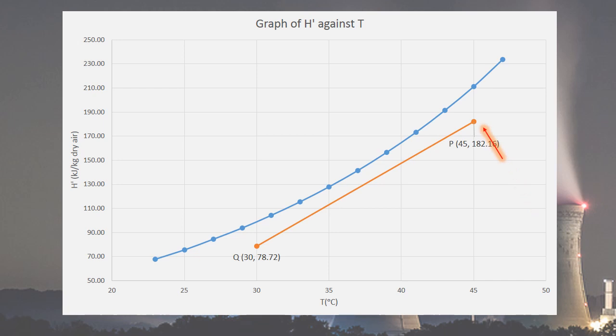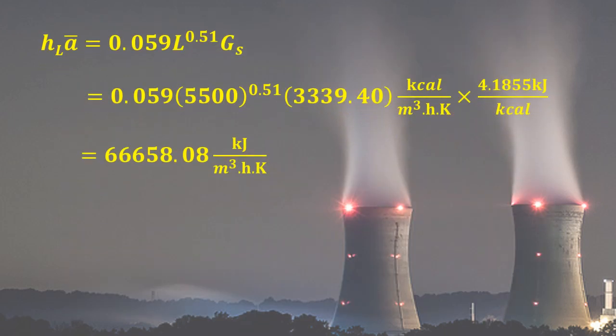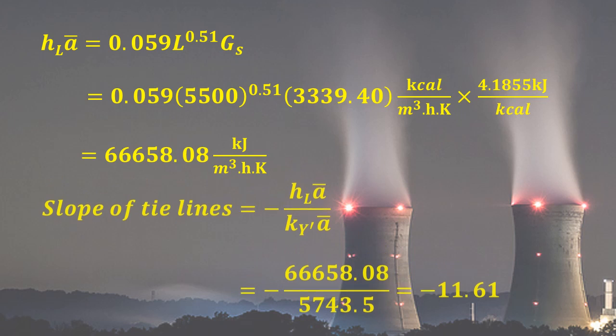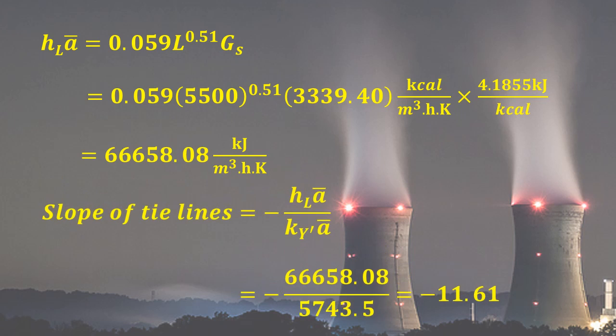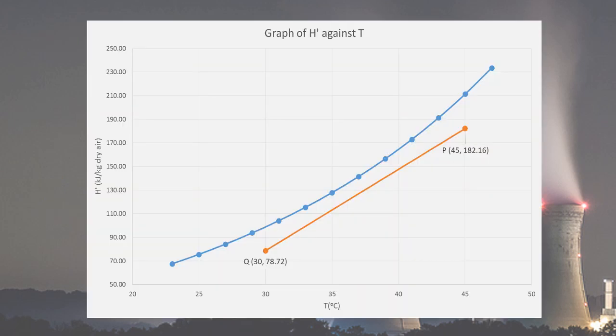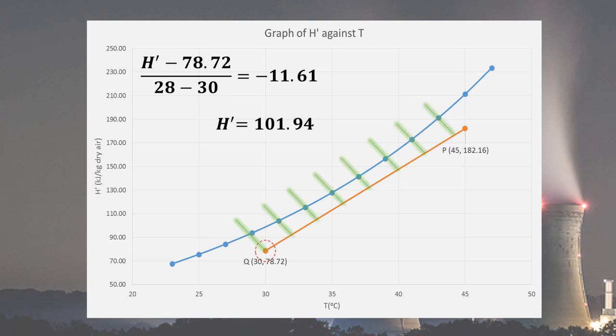Then, to construct a tie line, two points are needed: one at point Q, while the other is obtained by calculating H prime at temperature 28 degrees Celsius. This tie line must intercept the equilibrium line at point TLI and HI. More tie lines are then drawn parallel to each other.